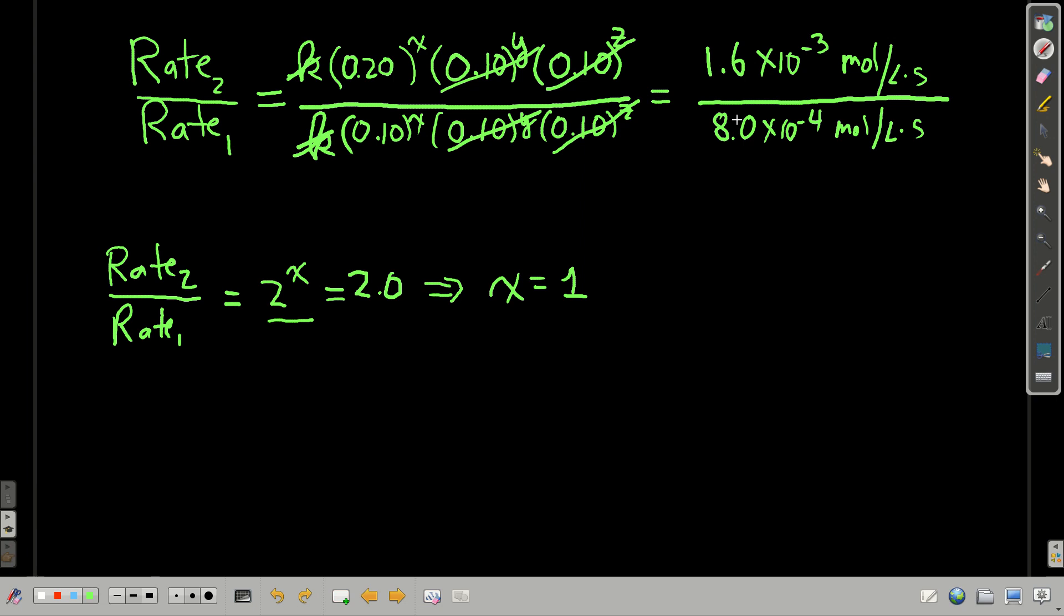That's where this came from right here. And dividing these two numbers here, 1.6 times 10 to the minus 3 divided by 8.0 times 10 to the minus 4 gives us 2.0. Solving this equation for x gives us x equals 1. All right, so now we know one of the coefficients in the rate law. We're going to do the same thing for the other two.